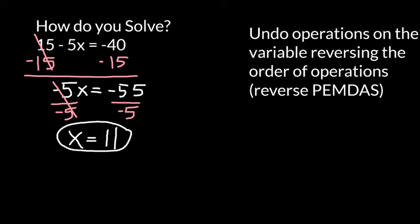x equals 11. I can do a quick check by plugging my 11 into my original equation. That gives me 15 minus 5 times 11 which is 55.